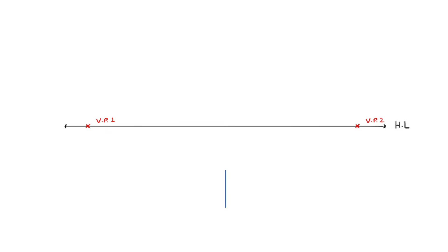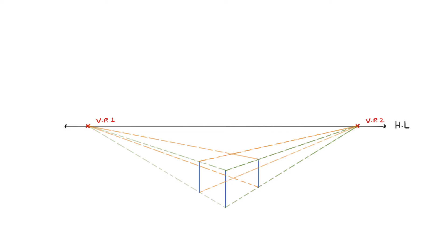From the top and the bottom of this line, we can connect back to the vanishing point on each side. This will give us the 2 edges of the box on the left and the right. We can then decide how wide we want the box to be and mark it with a vertical line on each side. Next, we do the same for the 2 vertical lines, connecting them to the furthest away vanishing points, since they are already connected to the adjacent point. With that, we have all 4 edges of the box. The only thing left is to connect the final height line in the back at the intersection between the perspective lines. And with that, we have our box in a 2-point perspective. It might be confusing at first, but the more you do this, the easier it will become.